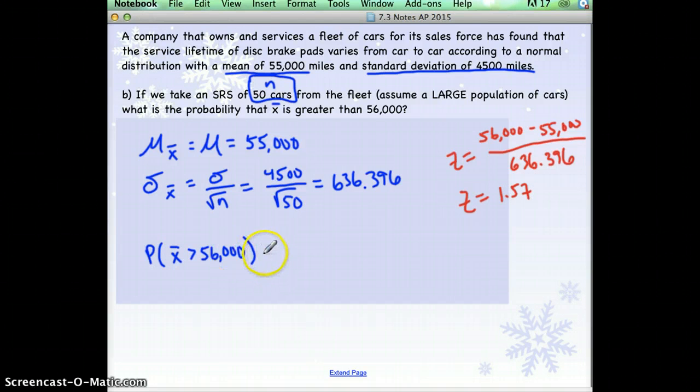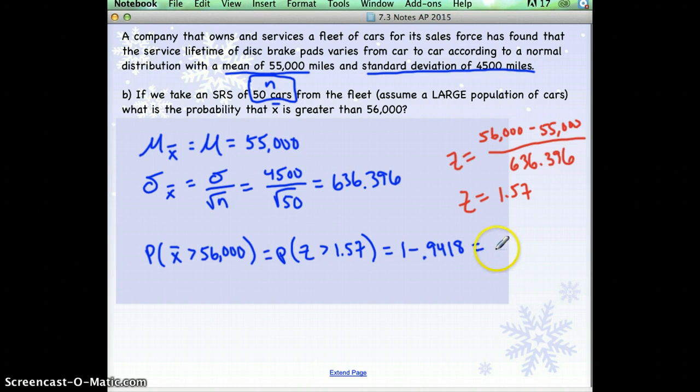So going back to our probability statement, we want the probability that x bar is greater than 56,000. That will equal the probability that our z-score is greater than 1.57. So look up 1.57, and since it's a greater than, we have to do 1 minus. So look up 1.57, and I believe it's 0.9418. And 1 minus 0.9418 should be 0.0582. And that's the answer to the question.